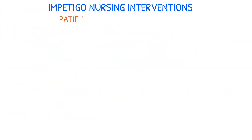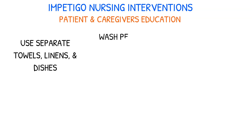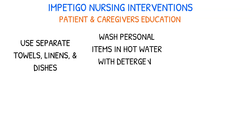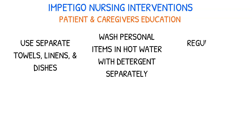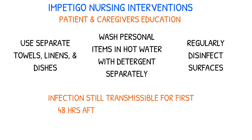Nursing students should educate patients and their families about proper hygiene measures at home. These include using separate towels, linens, and dishes for the affected individual, washing their personal items in hot water with detergent separately, and maintaining a clean environment by regularly disinfecting surfaces. Patients and caregivers should also be advised that the infection is still transmissible for the first 48 hours after starting antibiotics.